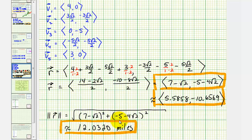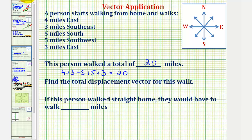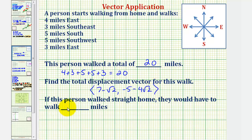Taking these answers back to the first page: the total displacement vector has an x component of 7 − √2 and a y component of −5 − 4√2. If the person walked straight home, they'd have to walk approximately 12.0320 miles. I hope you found this helpful.